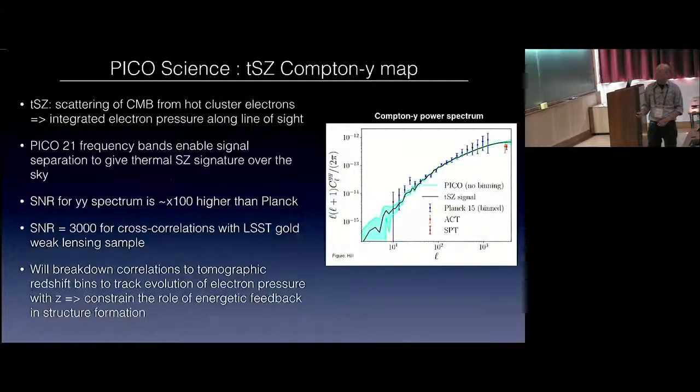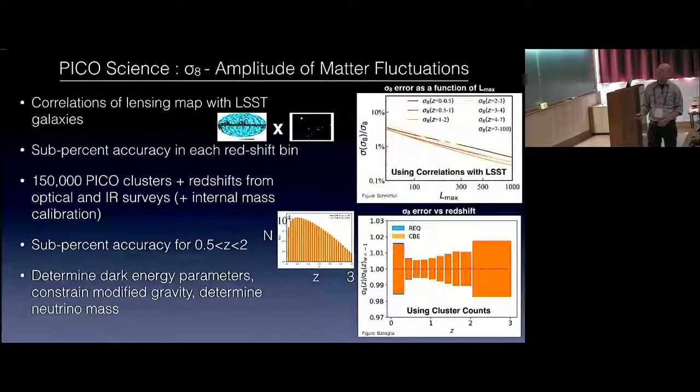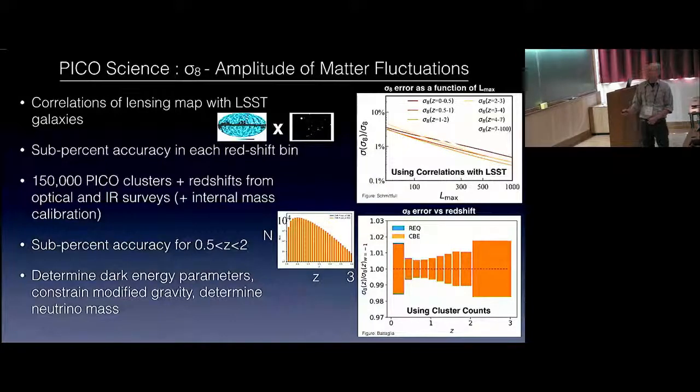Pico will detect 150,000 clusters with redshift, so this is N as a function of z. And once you get redshifts from optical and IR surveys, here we show again the similar Sigma-8 constraints as a function of redshift, fractional error. And you can see that in this range, we get fractional errors of less than a percent on Sigma-8. And this will give dark energy parameters, constrain modified gravity, and determine neutrino mass. This is one of the second constraints.